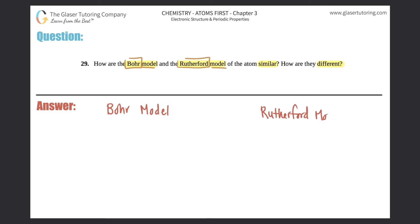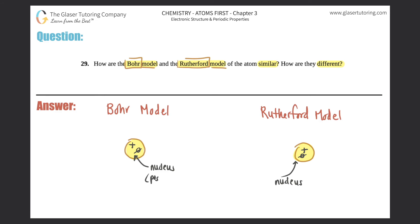I'm going to draw what each one basically looks like. For both of them, they contained a central nucleus. The Bohr model said there was a nucleus, the Rutherford model said there was a nucleus, and both said that inside the nucleus was majorly positive — because they both believed there were protons, which are positive, and neutrons, which have no charge. So the nucleus was a positive nucleus — that's one similarity.